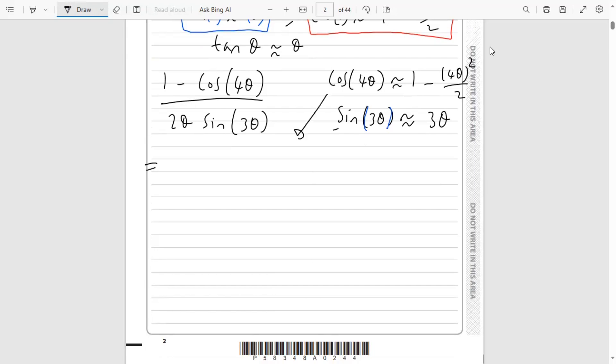Now we can plug these two results into our expression. We've got 1 minus cos 4θ, which is 1 - (4θ)²/2, all divided by 2θ, times sine 3θ which is approximately 3θ.